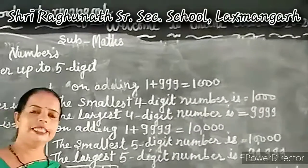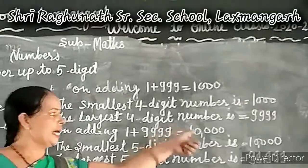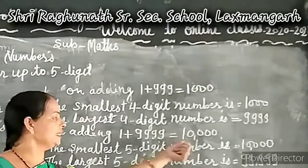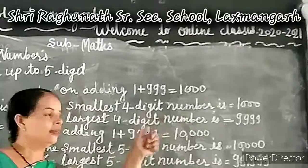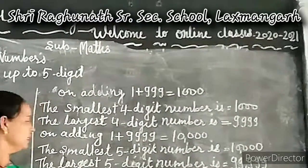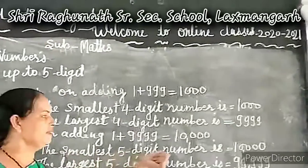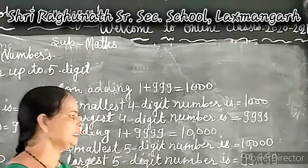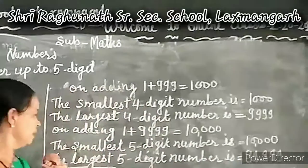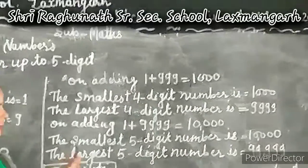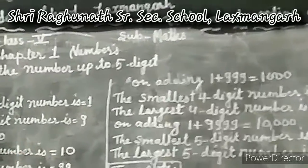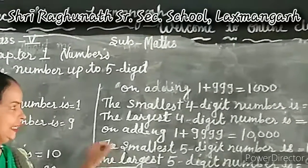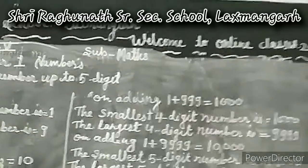In this class, we will learn about five-digit numbers. So what comes after 9,999? Adding one to 9,999 gives us 10,000. Ten thousand is the smallest five-digit number. So, the smallest number of five digits is 10,000, and the greatest five-digit number is 99,999.